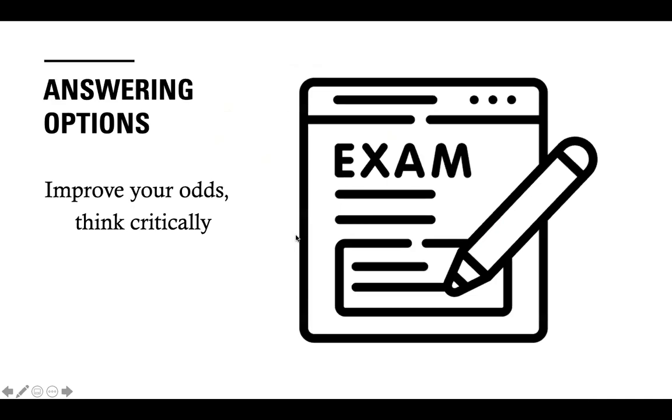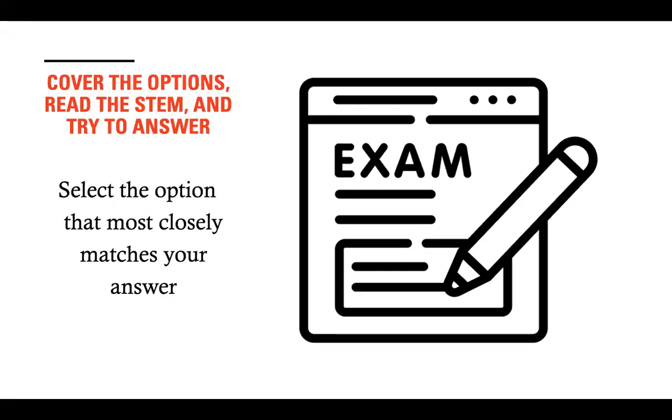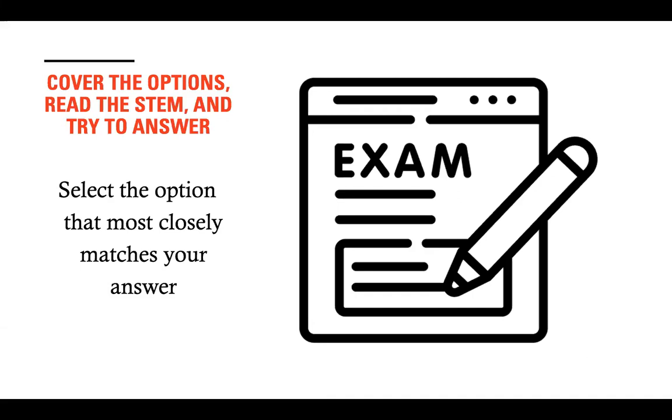Now, answering options. Improve your odds by thinking critically. What does that mean? If they give you one hour, two hours for the exam, use the time. Do not be in a hurry. Use the time to think. And you have to think critically. When you're in the actual exam or practicing at home, cover the options. Cover the options. Read the stem first, and you try to answer it without looking at the choices. Next, uncover the choices, and select the option that most likely, or most closely, matches your answer.